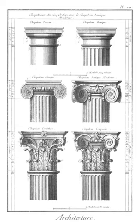Pediment: in classic architecture, the triangular-shaped portion of the wall above the cornice which formed the termination of the roof behind it. The projecting mouldings of the cornice which surround it enclose the tympanum, which is sometimes decorated with sculpture. Pelmet: a framework placed above a window.